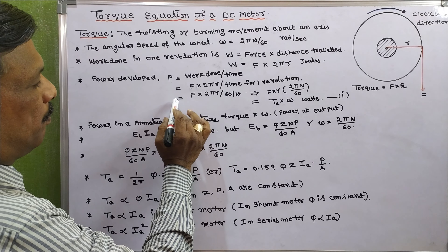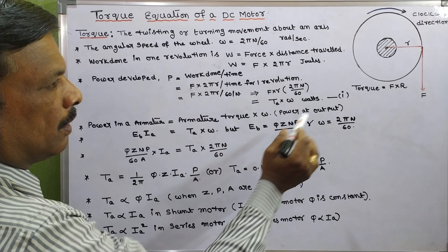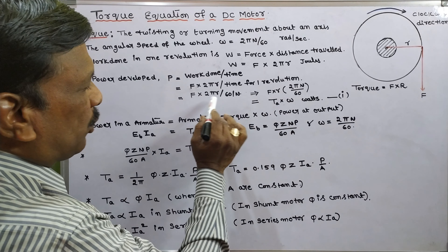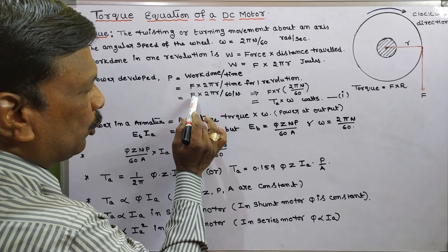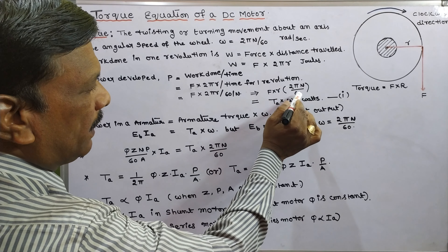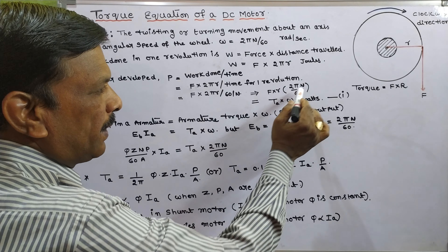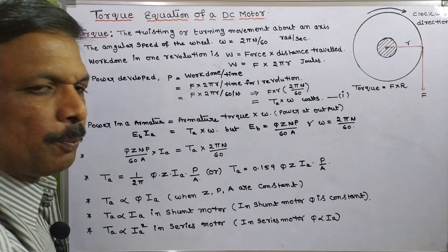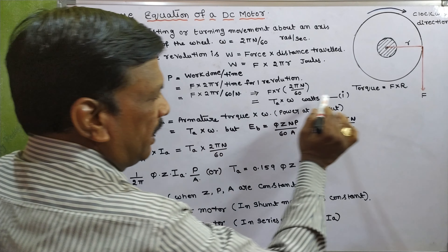Output power P equals force into distance travelled divided by time taken to complete one revolution, that is 60/N. We can rewrite this as force into R, and the remaining part is 2πN/60. Since force into radius equals torque, and 2πN/60 equals omega, the output power equals torque into omega. This is equation 1.